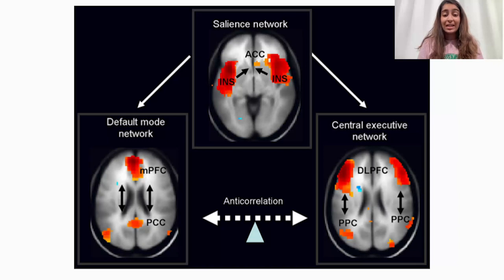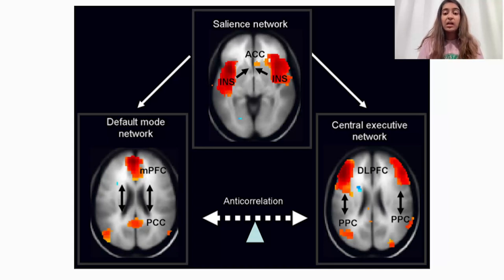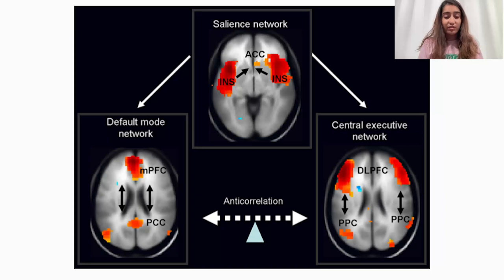which is majorly involved in constructing dynamic mental simulations based on personal past experiences, used in remembering, thinking about the future, and generally when imagining alternative perspectives and scenarios to the present. It's also involved in social cognition, like when we're imagining what someone else is thinking. And the salience network, which selects which stimuli are worthy of our attention and has a robust prediction of individual creative ability from brain functional connectivity.